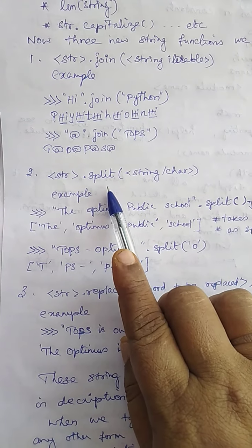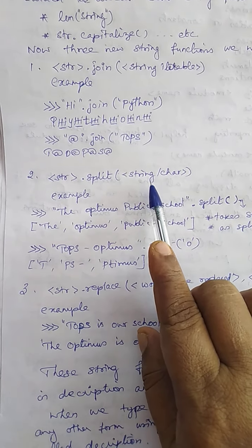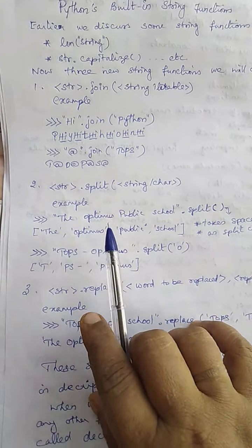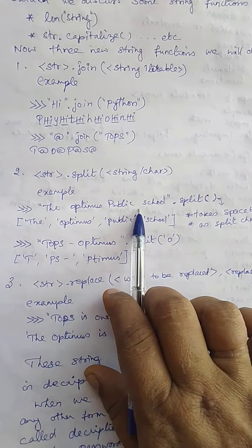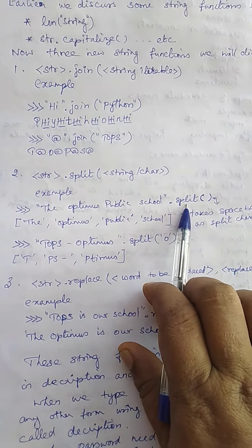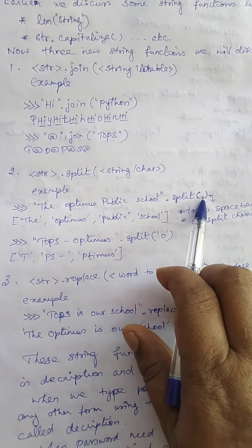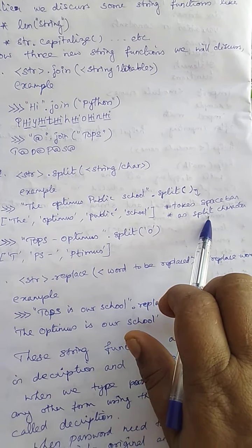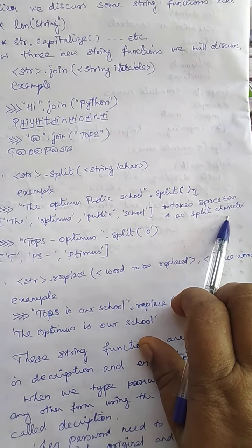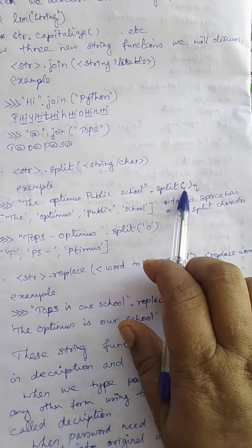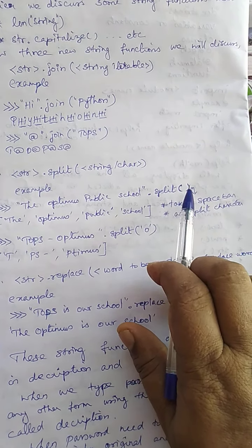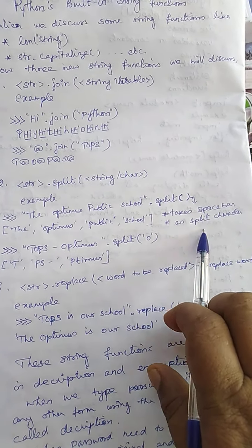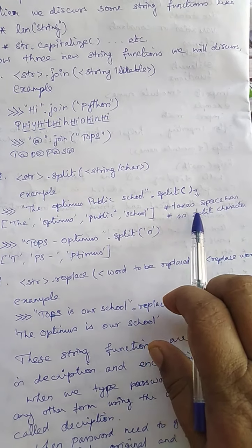The second function is string dot split. Here we can give a single character or an iterable string — more number of characters or a single character. See: 'optimus public school' is one string, dot split with nothing given in the function bracket arguments. Then by default it reads the space bar — it takes the space bar as the splitting character. So the split function will take the space bar between the words as the split character.